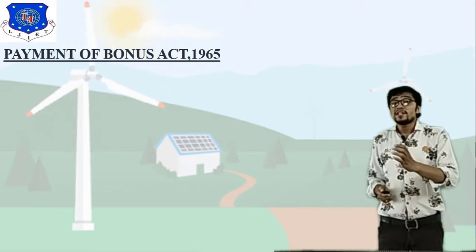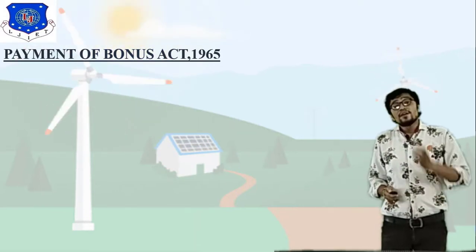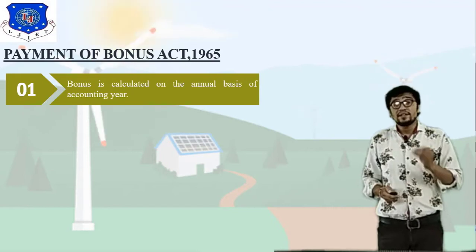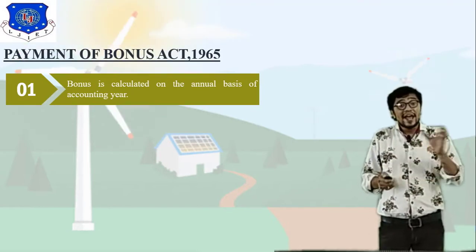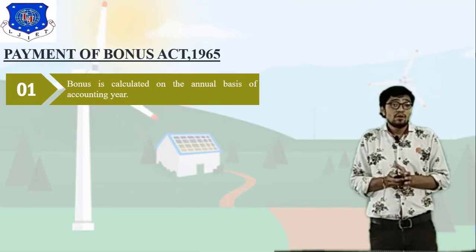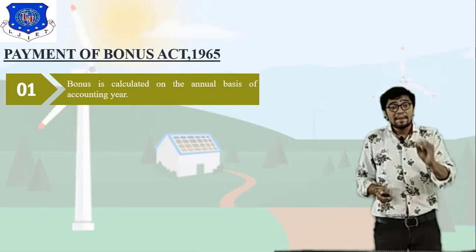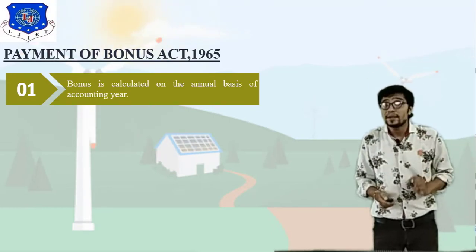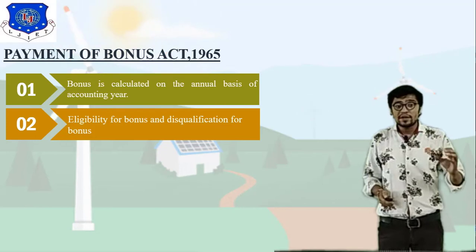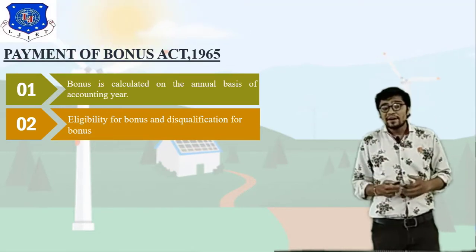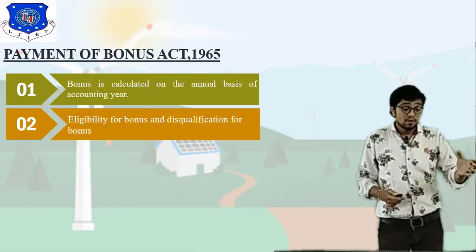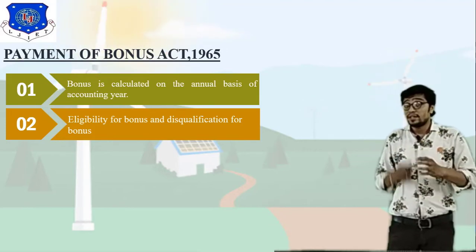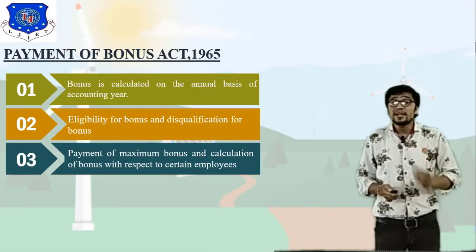Moving to the Payment of Bonus Act 1965. Bonus is calculated on the annual basis of the accounting year — this is what the Payment of Bonus Act covers. There are two key aspects: eligibility for bonus and disqualification for bonus. These rules and regulations are decided by the management.